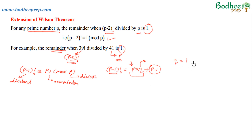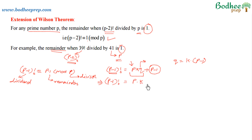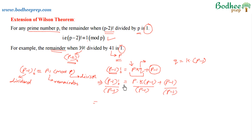Let us assume that quotient q = k·(p-1), which ensures the left-hand side is a multiple of (p-1). Substituting the value of q, we can write: (p-1)! = p·k·(p-1) + (p-1). Now dividing both sides by (p-1), we get (p-2)! = p·k + 1.